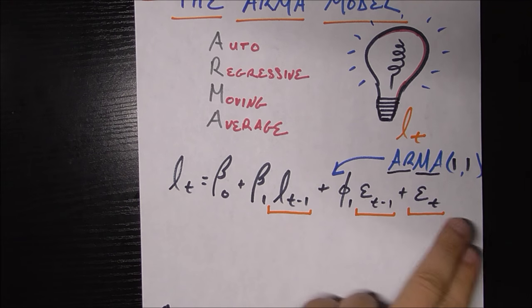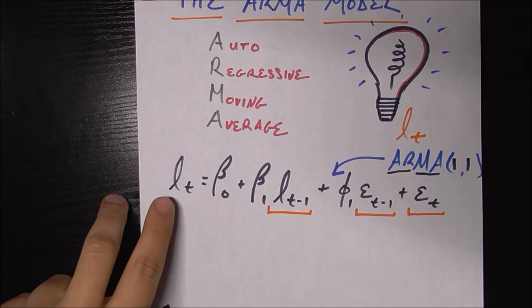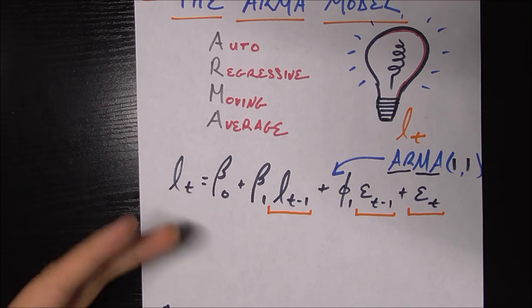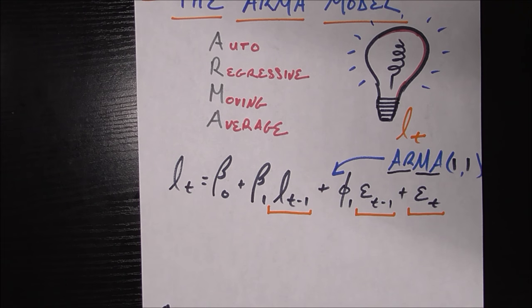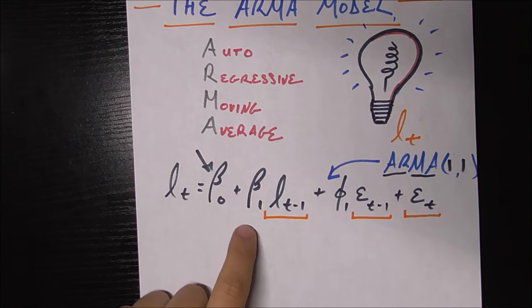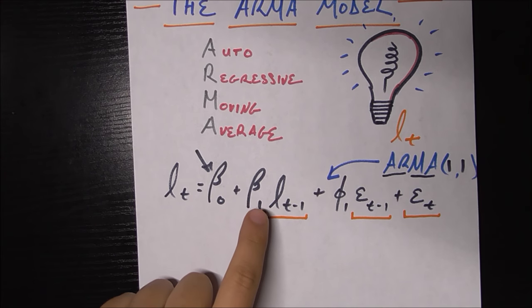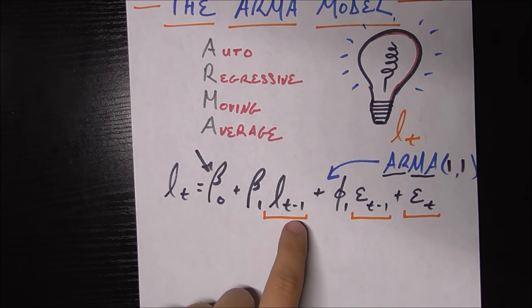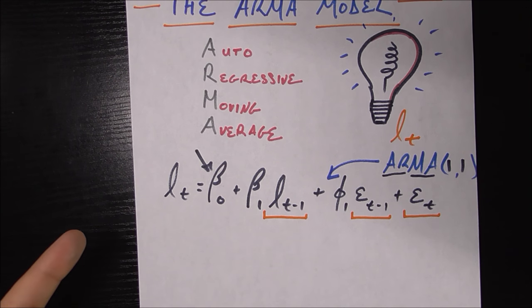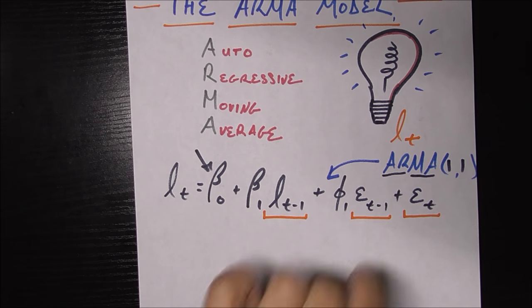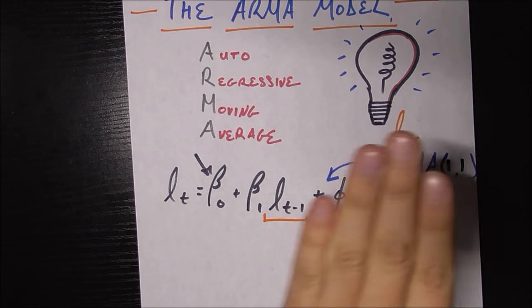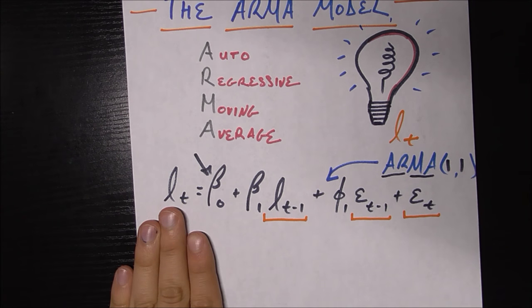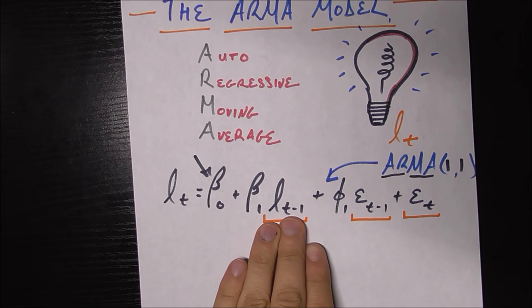If we want to read this equation, it says that L sub T, the number of light bulbs you're going to create this month, is equal to some coefficient beta sub 0, which is just a constant. Beta sub 1 is a different coefficient. Then it gets interesting: L sub T minus 1, which is the number of light bulbs you needed to create last month. This is the autoregressive bit. If we were to just stop here, this would be an AR(1) model.